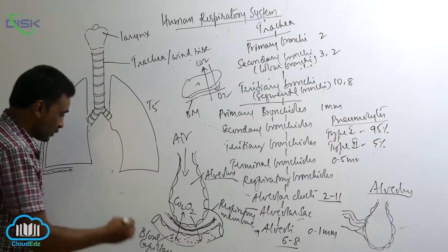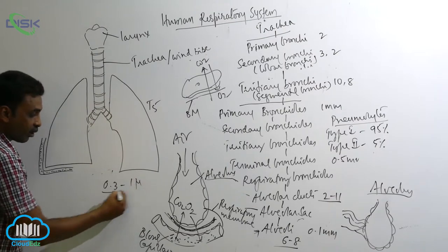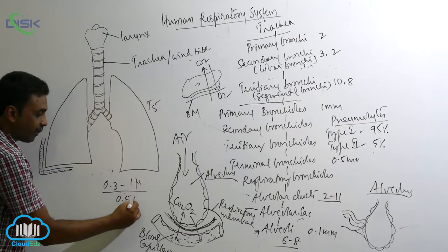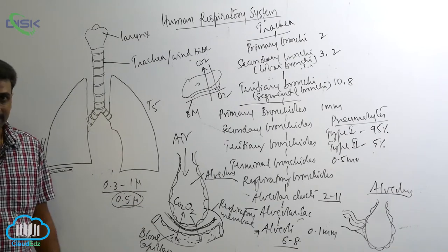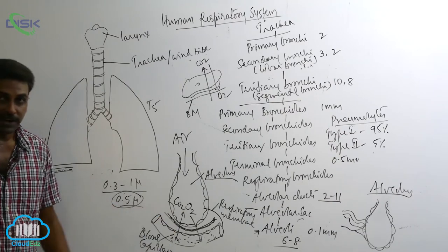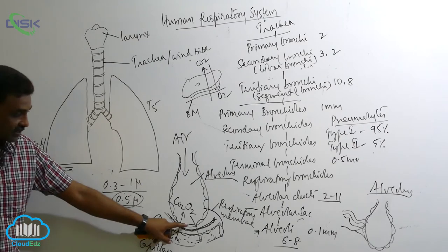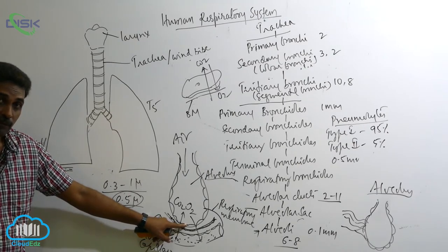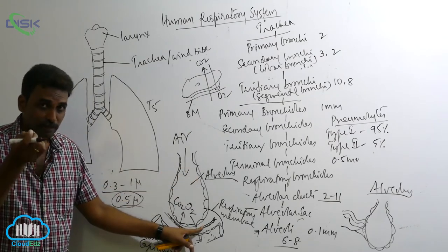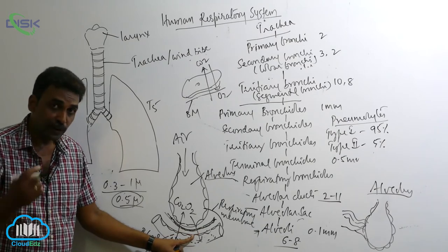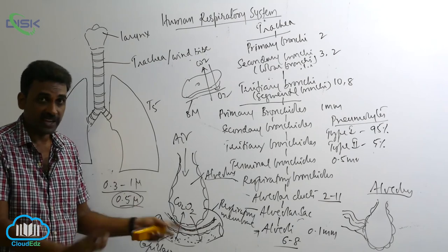The thickness of the respiratory membrane can be anywhere from 0.3 to 1 micron, but on average it is half a micron. It includes the simple squamous epithelium containing the pneumocytes of the alveolus, two layers of fused basement membrane, and the endothelium of the blood capillaries. This is the place where exchange of gases occurs.